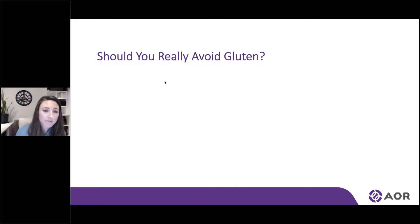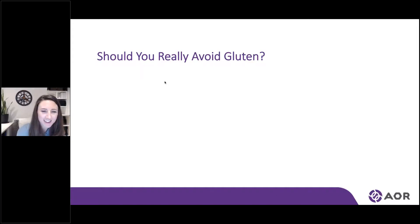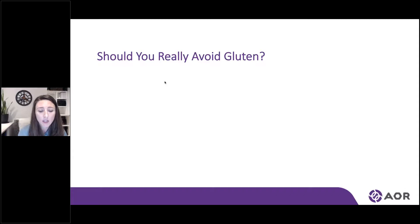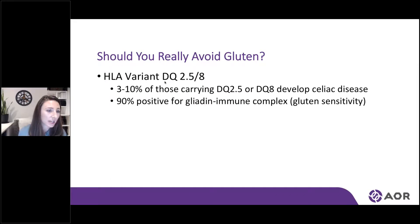Another great example is through gluten. Should we really avoid gluten? 1% of the Canadian population actually has celiac disease, which is an autoimmune disease, while 33% of Canadians avoid gluten. Through genetics, we can identify those who are at a predisposition to celiac disease as well as gluten sensitivity. If you are a carrier of the HLA DQ 2.5 or 8 version of a gene, there's a higher risk of developing celiac disease. About 90% of individuals who have celiac disease are carriers of this gene.